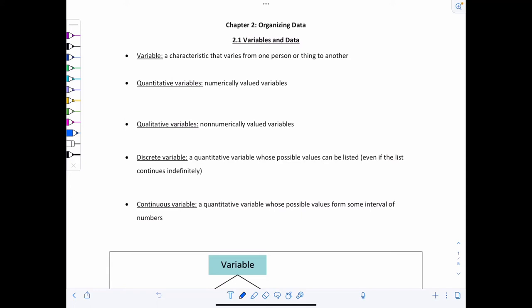Welcome to Math TV with Professor V. This is Introductory Statistics, Sections 2.1 and 2.2. Section 2.1 covers variables and data. So what is a variable? It's a characteristic that varies from one person or thing to another.